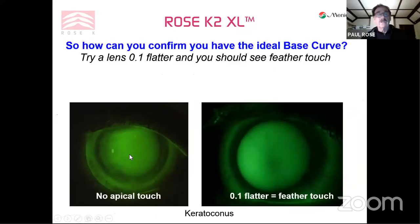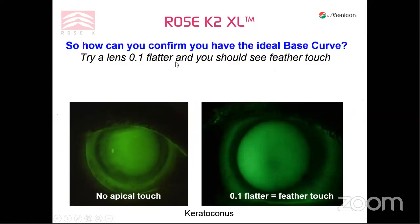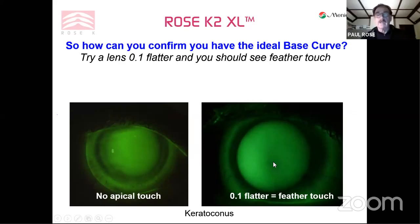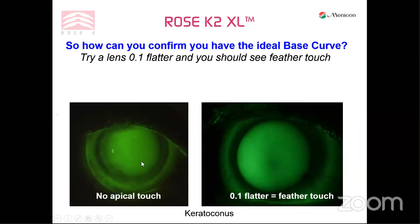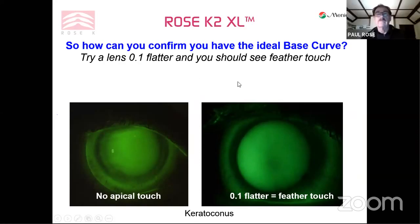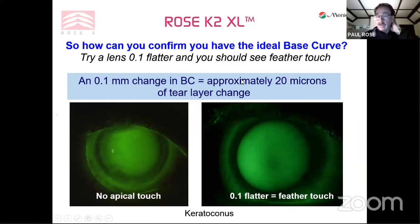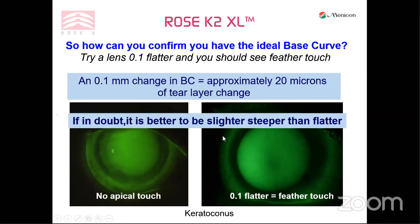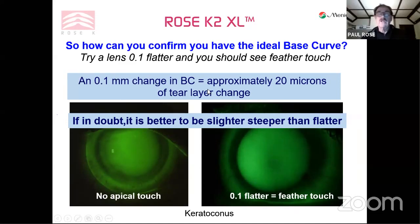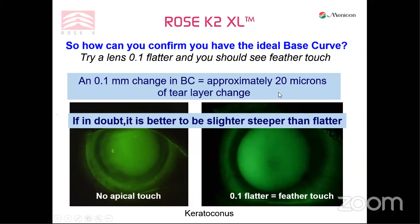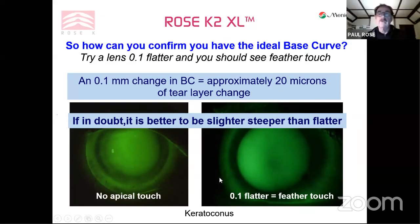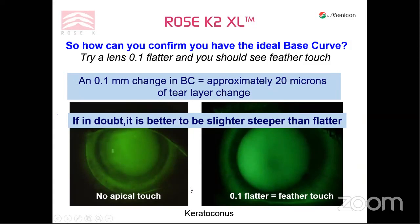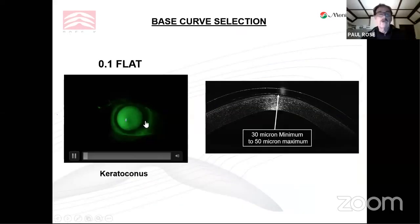Topographers recognize this. From the simulated image from a Medmont topographer, you can see how this zero point corresponds to the apex of the cone — starting just to see clearance there. The TLA thickness at the bottom shows around 35 microns of clearance; simulated fluorescent images already require at least 20–25 microns before you will see fluorescence. This is steep; this is flat — not difficult to tell from those images. The correct fit: go 0.1 flatter and you should just see the apex touching. If in doubt, go slightly steeper than flatter. Approximately a 0.1 change is somewhere between 20 and 30 microns; every time you steepen by 0.1, you add 20–30 microns to the TLA thickness.